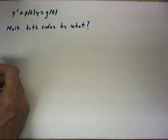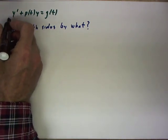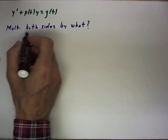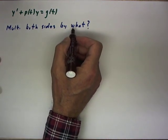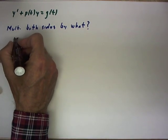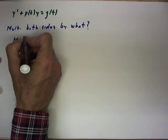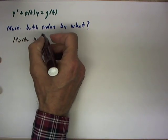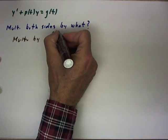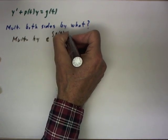Let's see if we can apply the method developed or outlined previously. We have this equation. We can solve this equation if we multiply both sides by e to the integral of p of t dt.